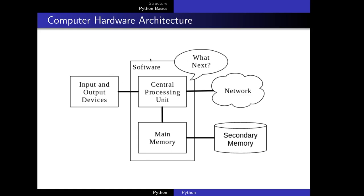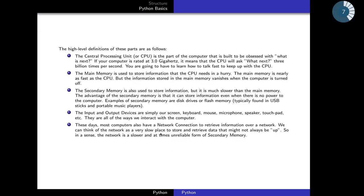To give tasks to a computer, you have to talk with the CPU. For that, you have to learn a computer language like Python, Java, C, or C++. The process of learning a computer language is similar to learning a natural language like Sinhalese, Tamil, French, English, or Japanese.